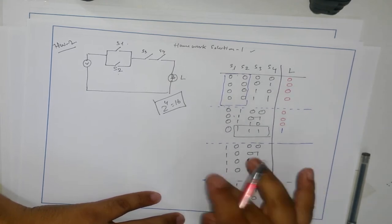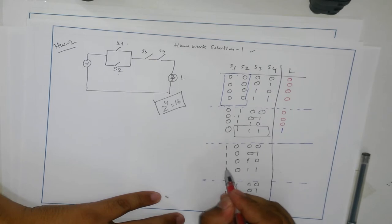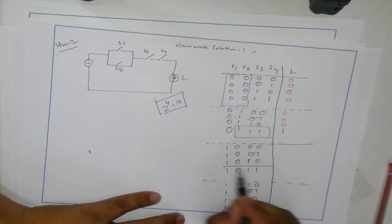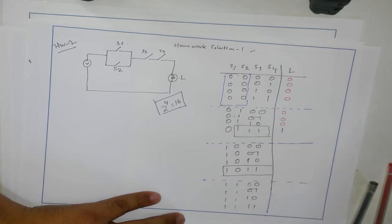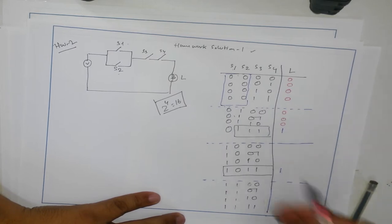Okay, so next, S1 is true. So again, it will be true if only both of those, S3 and four, are true. Only this one, so this one will be only true, and others are going to be false.